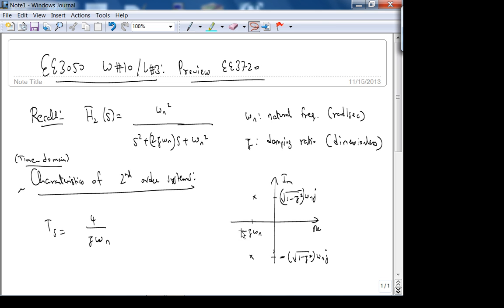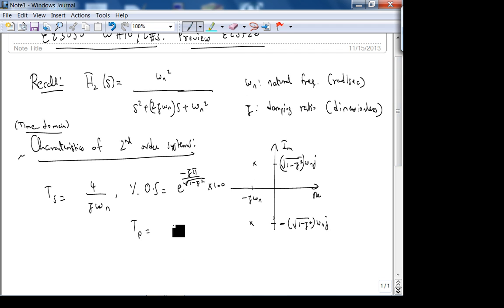Here is the real part of your complex conjugate pole. Recall for first-order was four over a. The settling time is very similar. Then we had percent overshoot, which was e to the minus zeta pi over square root of one minus zeta squared times 100. Peak time was pi over omega n times square root of one minus zeta squared. Rise time we have to determine from a table because there's no closed form expression.